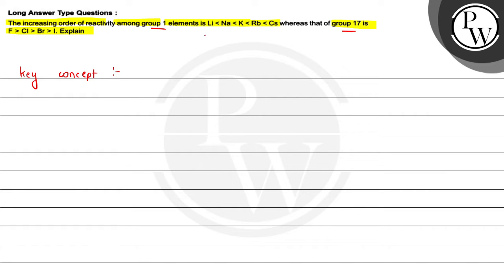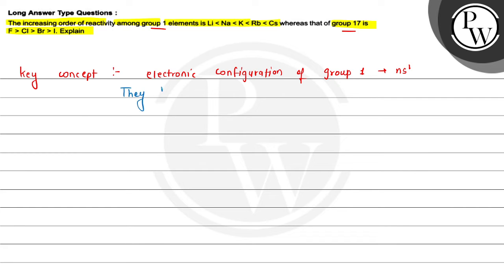Firstly, we will talk about group 1 elements. Group 1 elements have one electron in their valence shell because the electronic configuration of group 1 elements is NS1. That means in the outermost shell, one electron is present. So they have a tendency to lose the valence electron.